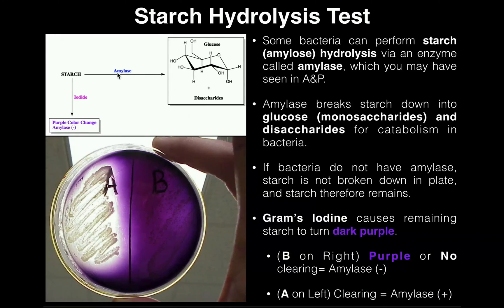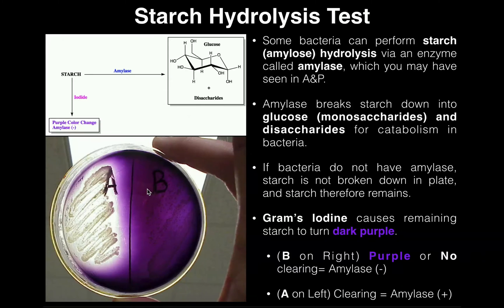In this test, amylase is going to be the enzyme that we're detecting. The way that we actually run this test — the starch hydrolysis test — is we have a plate that's actually going to be coated in starch initially. It'll look very similar to a TSA plate, but it's going to be coated in starch, which happens to be the substrate for our enzyme amylase.